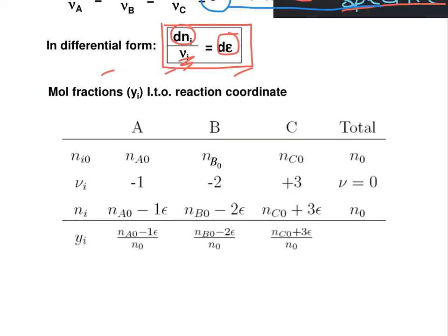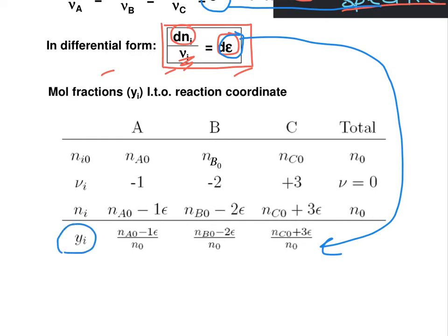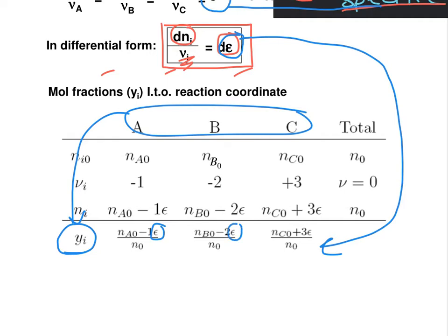We want to use this reaction coordinate to express the composition in our reacting mixture. Instead of having three unknown mole fractions for three components, we want to express all mole fractions in terms of this reaction coordinate — giving us one unknown in the system instead of three individual mole fractions.